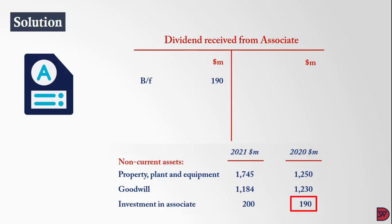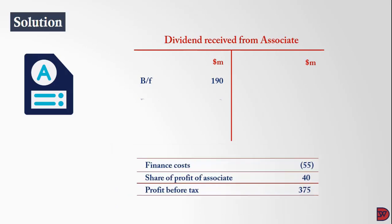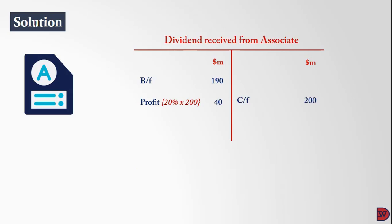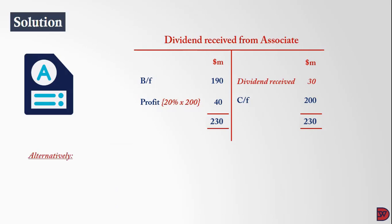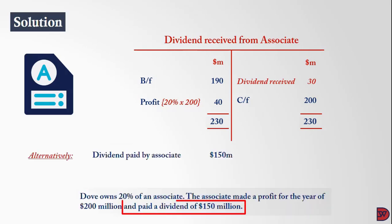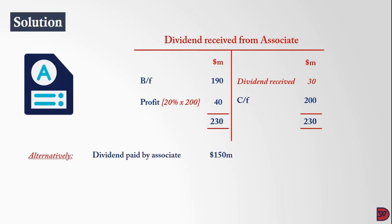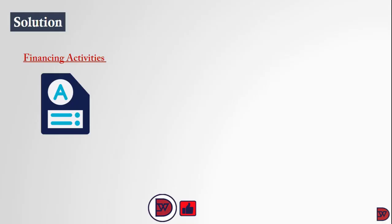For dividends from associates: the value of the holding at the start of 2020 was 190 million. The parent's 20% share of the associate's profit for the year is 40 million, giving an expected balance of 230 million. The closing value in 2021 was 200 million, meaning dividends of 30 million were received. Alternatively, take the total dividend paid by the associate of 150 million and calculate 20% to get 30 million.